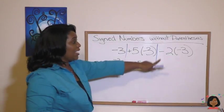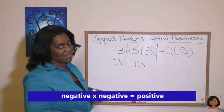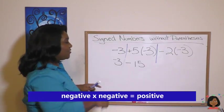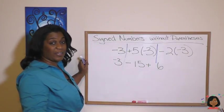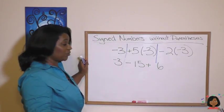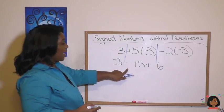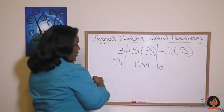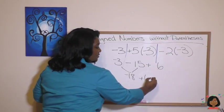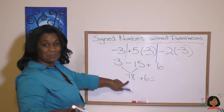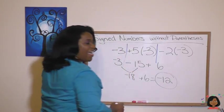Let's go to the last one. Negative two times a negative three. A negative times a negative is a positive. So we're going to be plus six. And now we can work it from left to right in the order we see our addition and subtraction. Negative three minus 15 is going to be negative 18 plus six. Negative 18 plus six is going to be negative 12. And that is our answer.